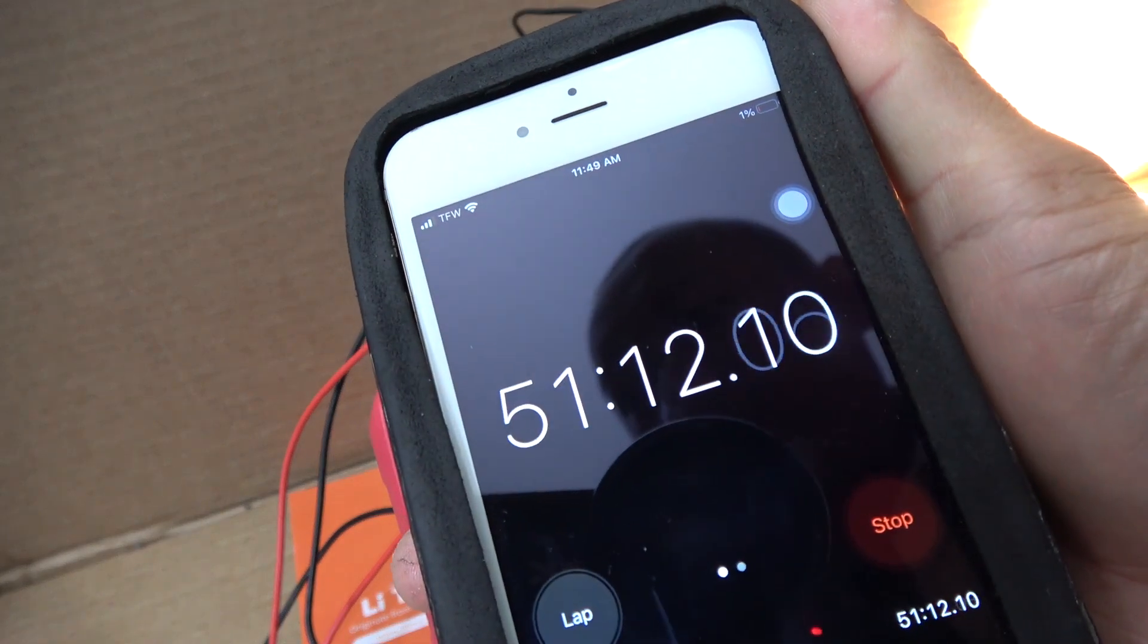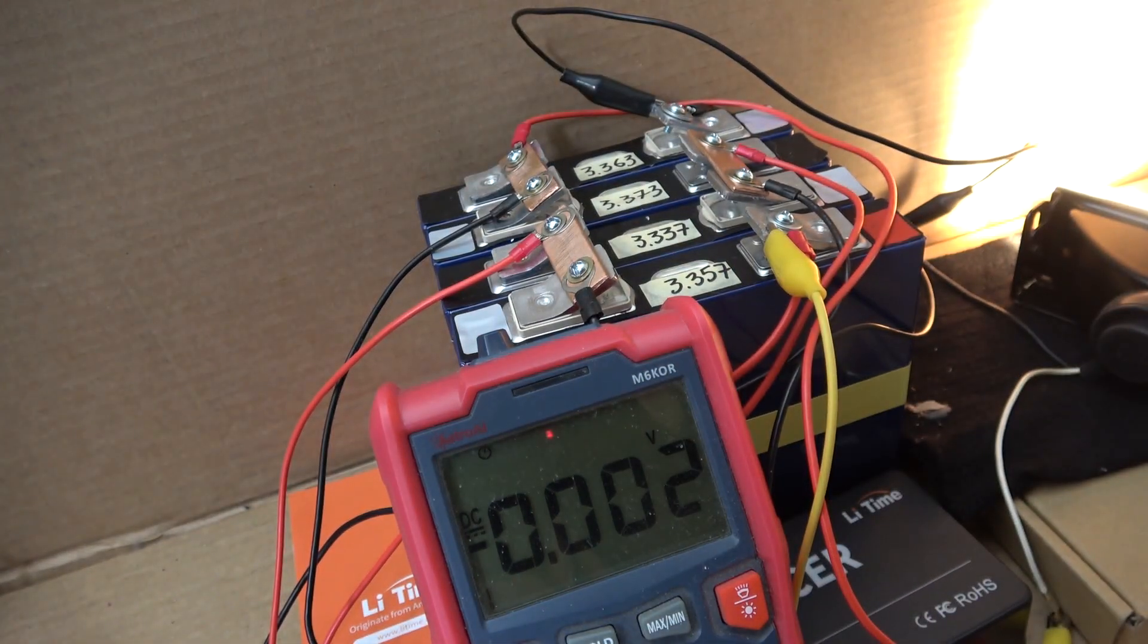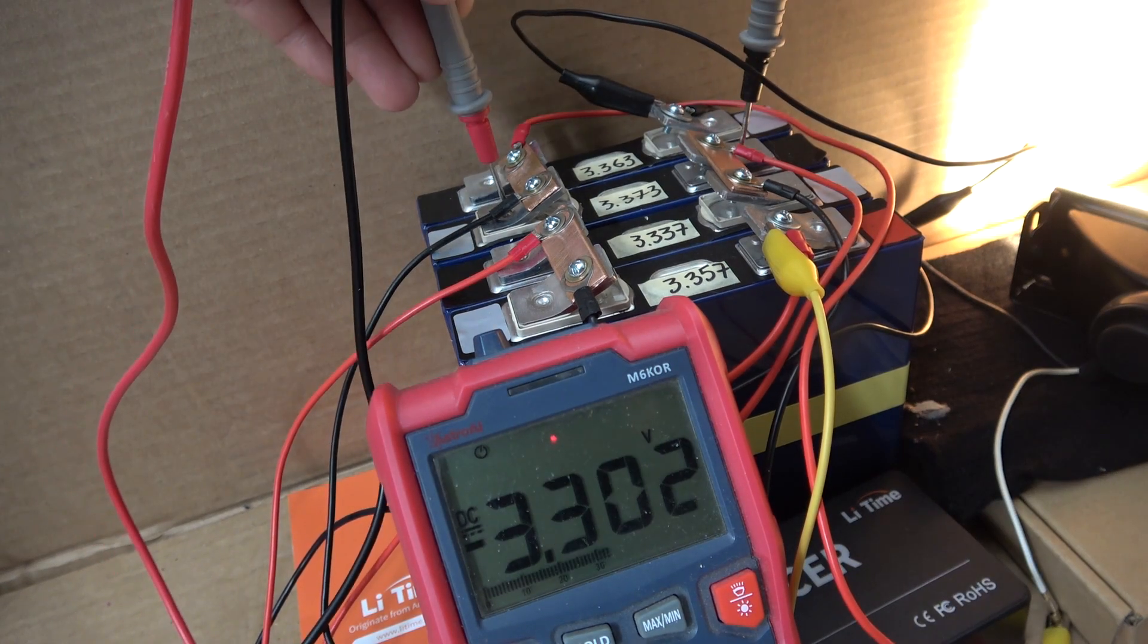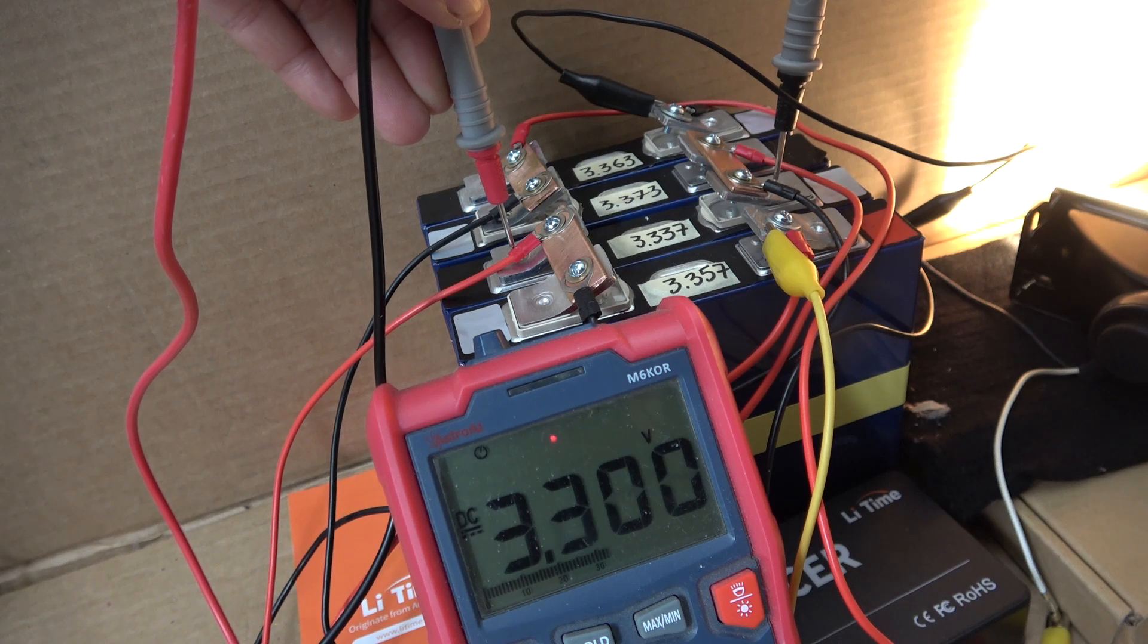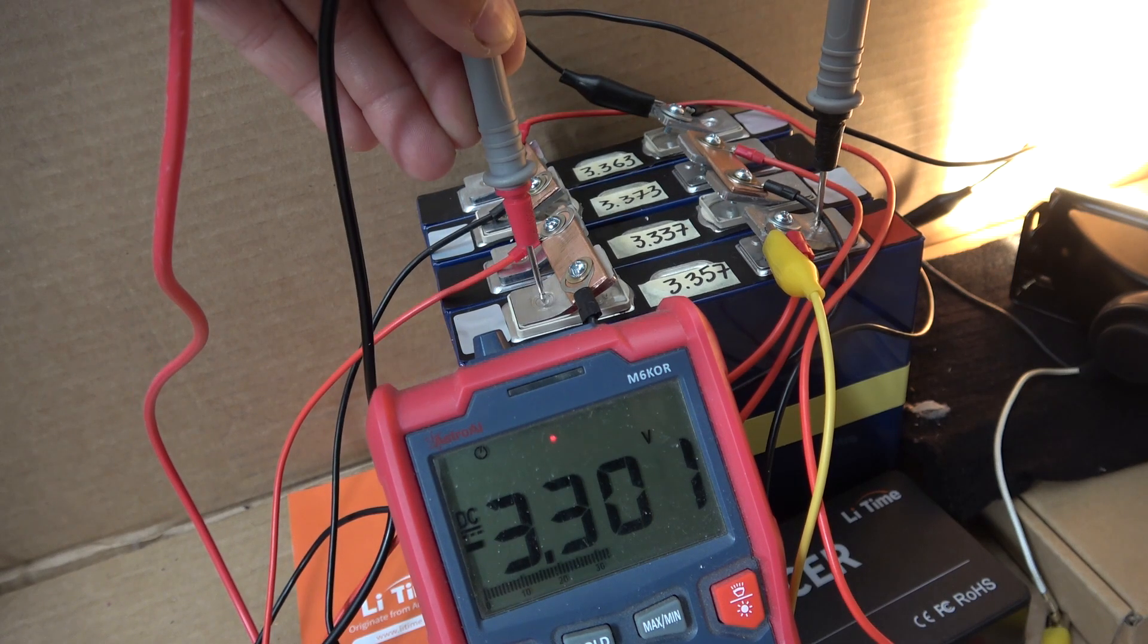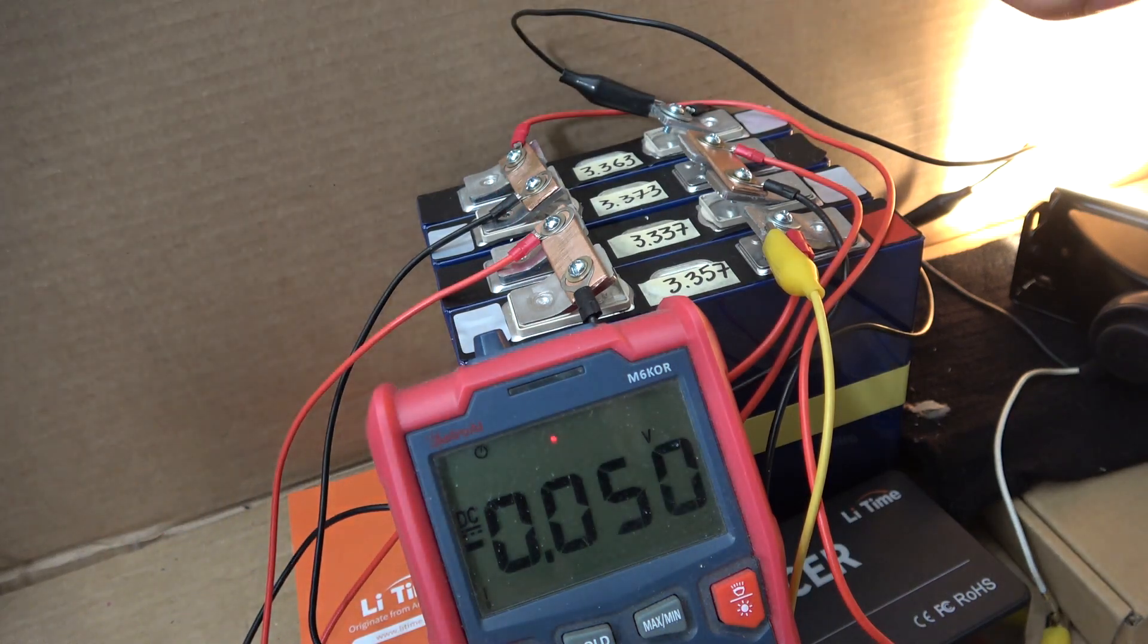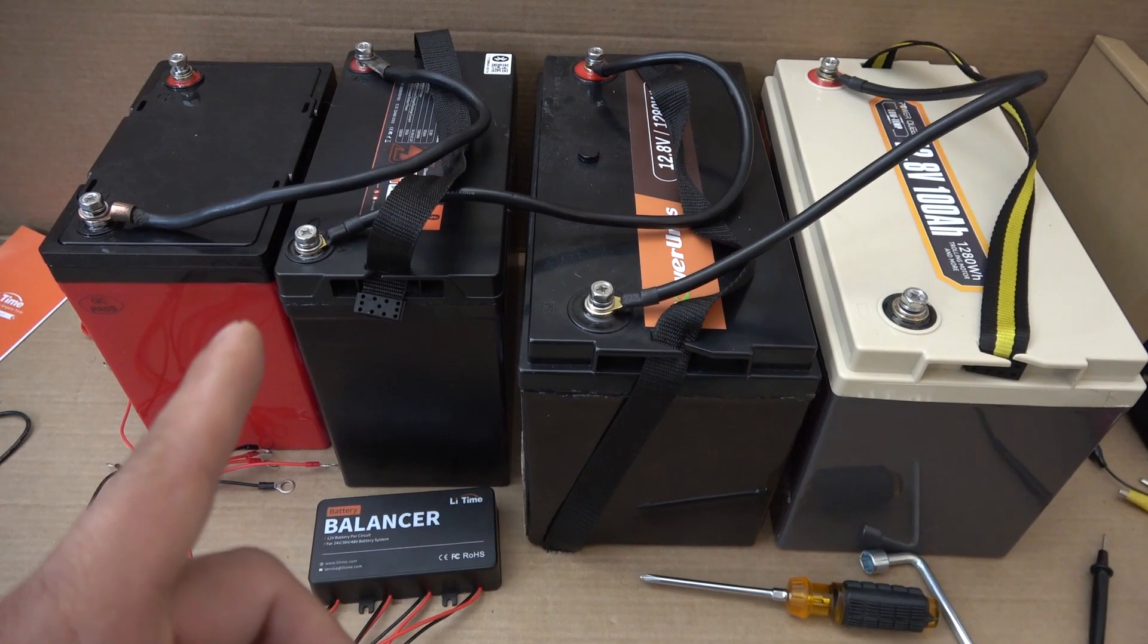All right, it has been almost an hour since I plugged in my light bulb. Let's see what we got. 3.303, 3.302, very close. 3.299, 3.300, that's close enough. 3.301, so yes, they are still very close even though it's been under load for almost an hour.